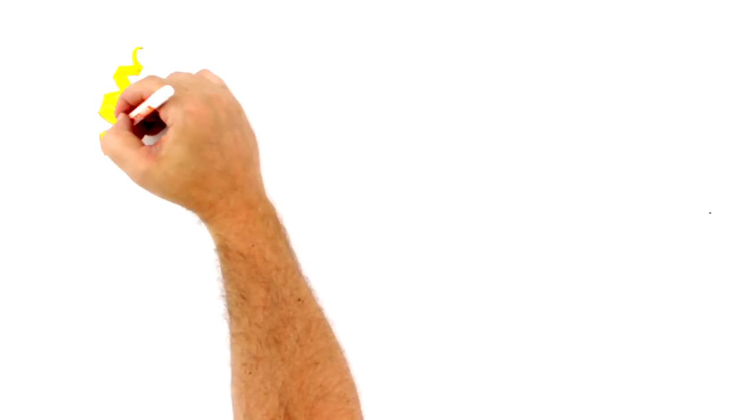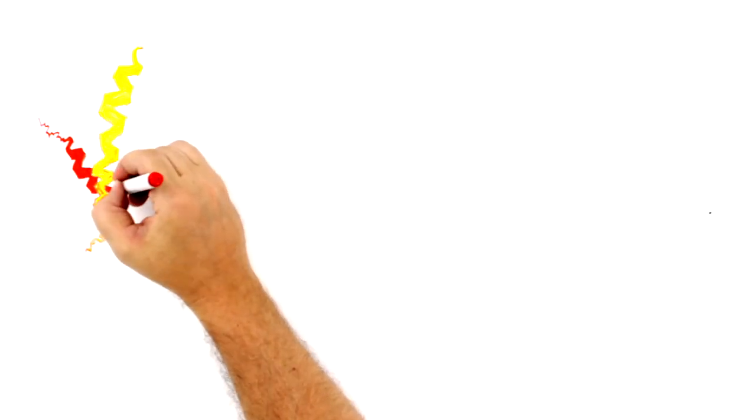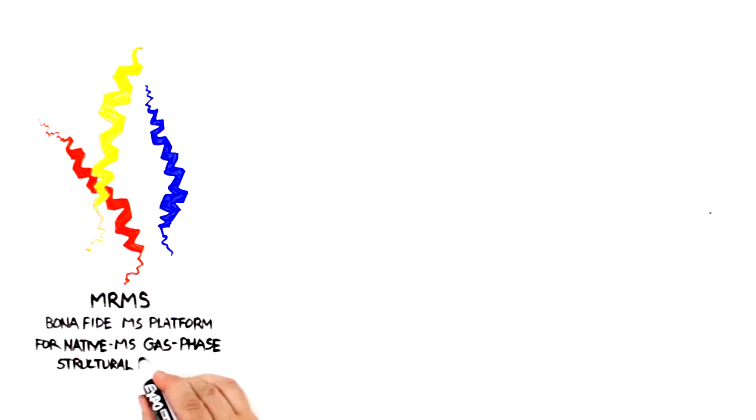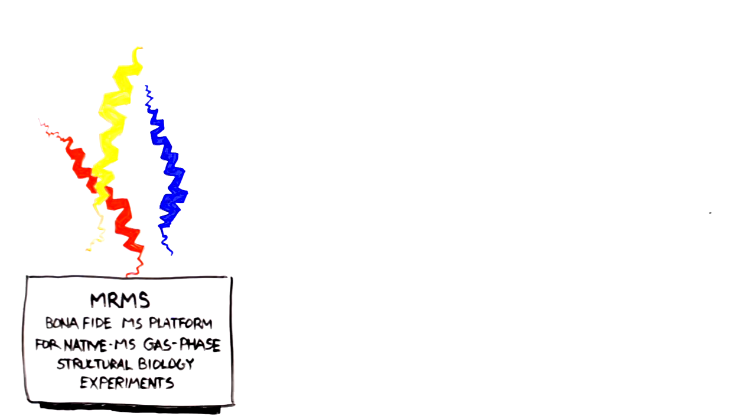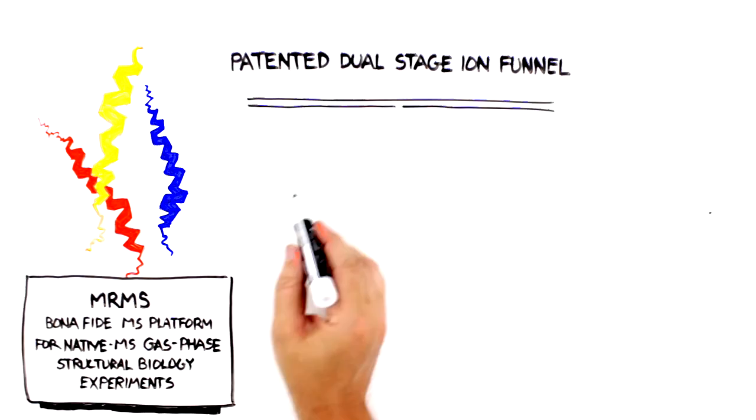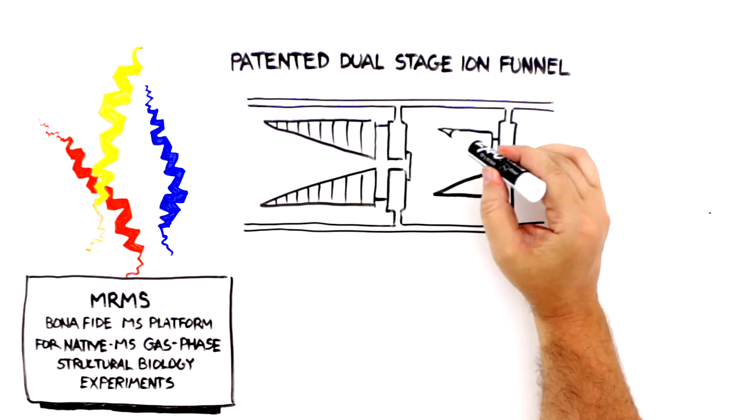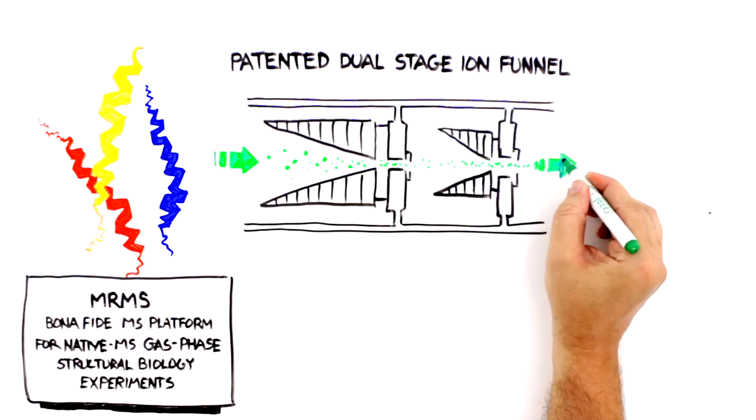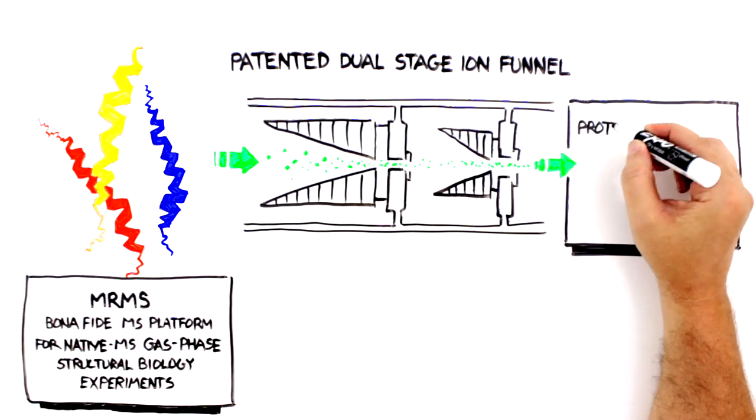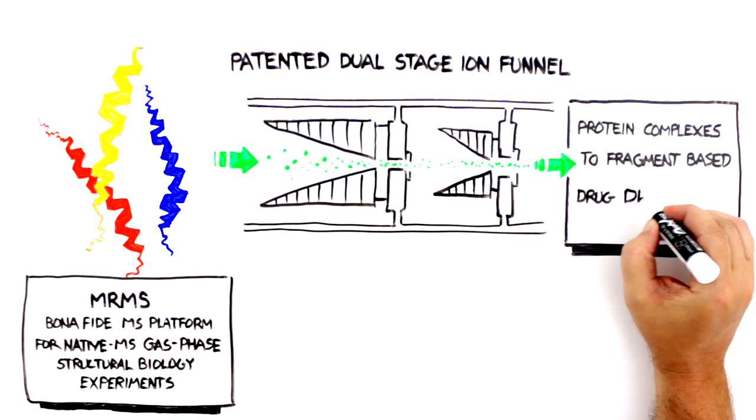If proteins are your thing, MRMS has been cited in the scientific literature as a bona fide MS platform for native MS gas-phase structural biology experiments. Studies of large proteins and protein complexes are simplified with Bruker's patented gentle dual-stage ion funnel built to enable top-down studies ranging from protein complexes to fragment-based drug discovery.